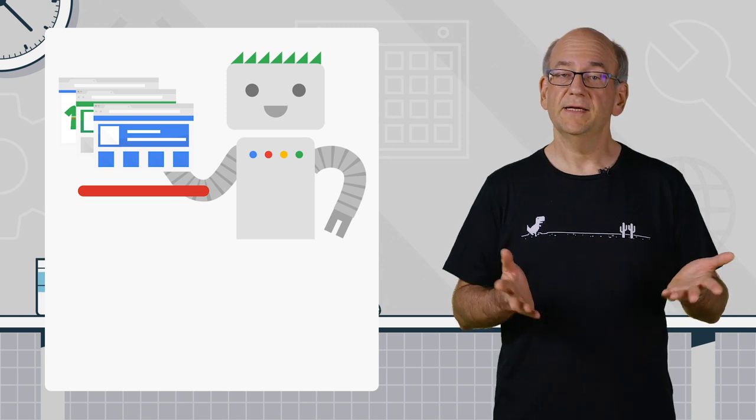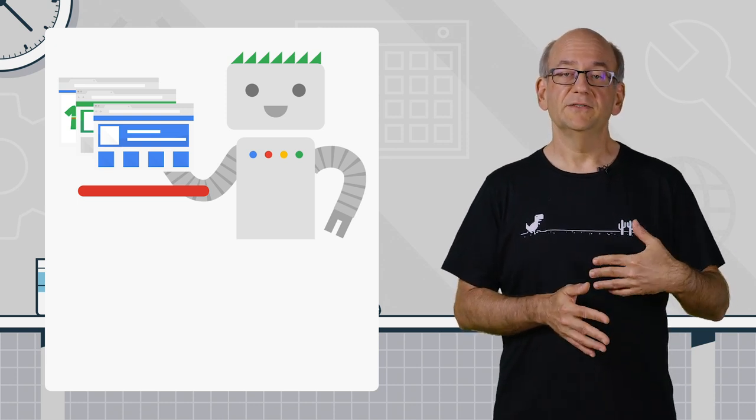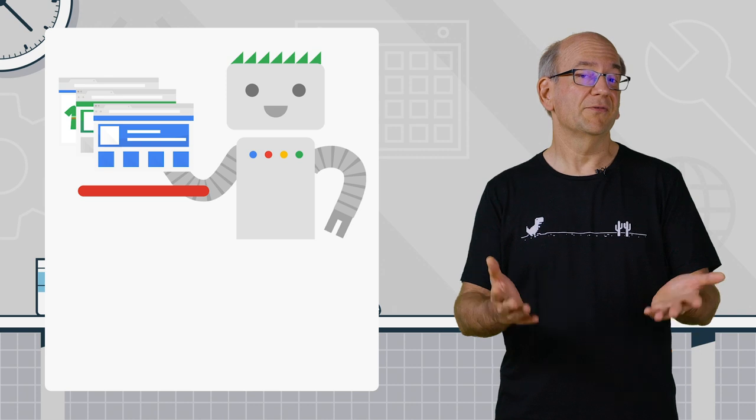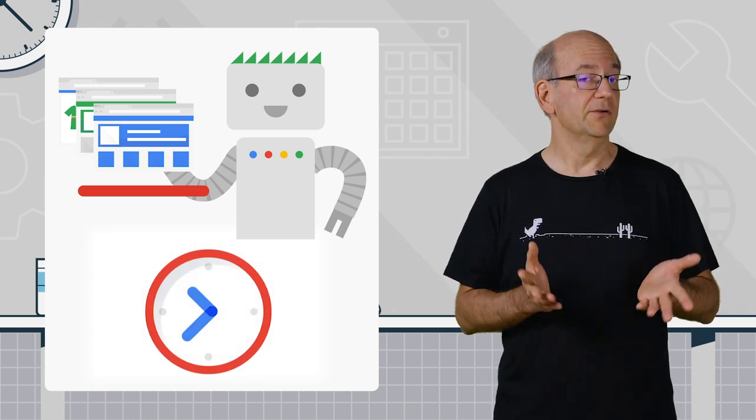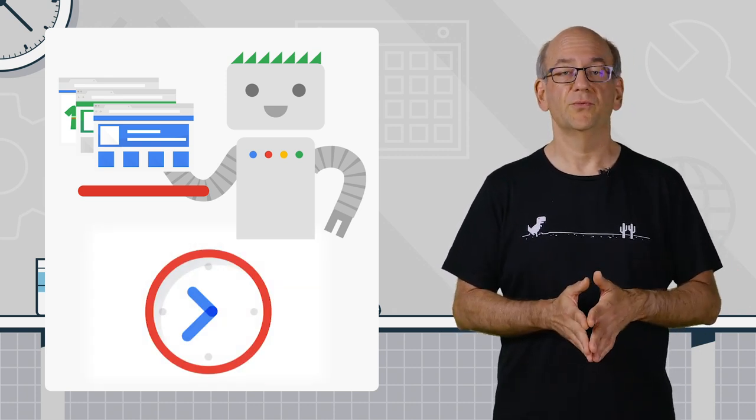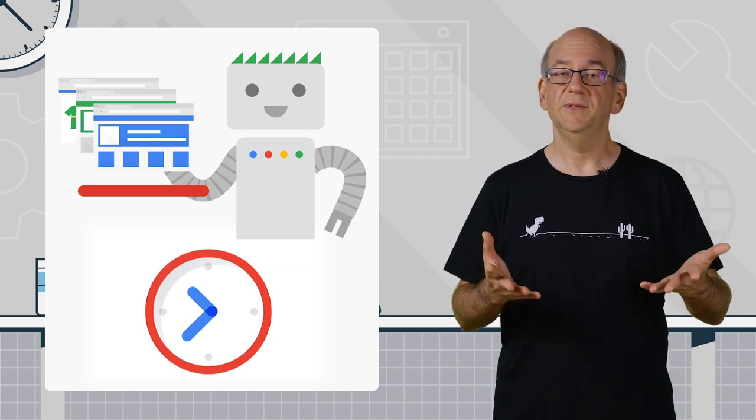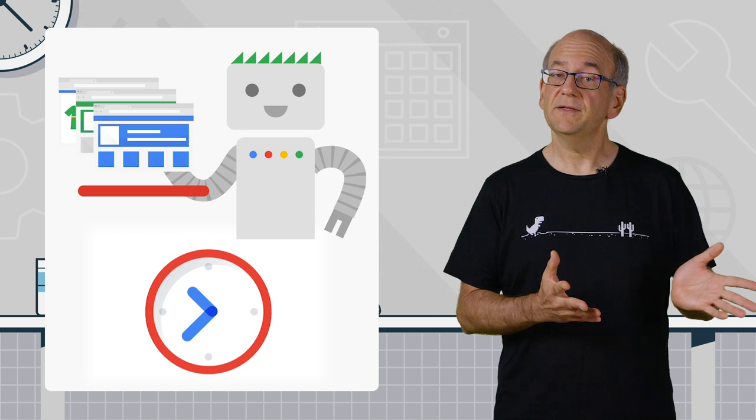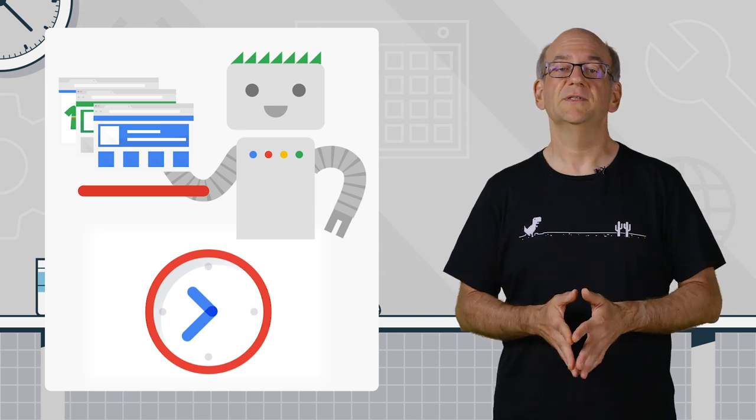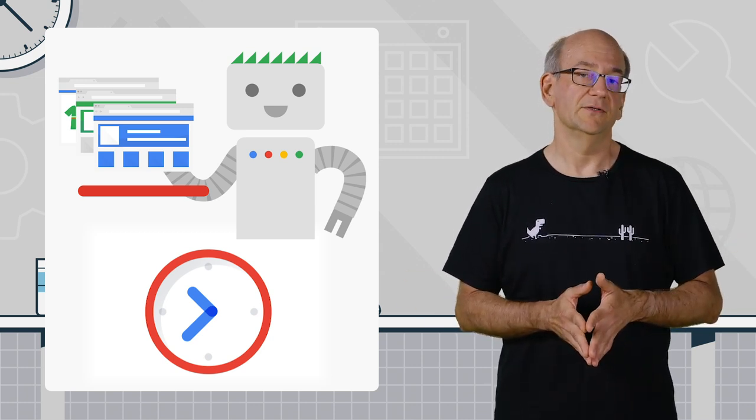So when we recognize that your server has changed, our systems will generally throttle back, make sure that your new server can cope with the extra work of Googlebot crawling, and then over time we'll increase the speed again to a rate that works well for your server and that helps us to keep your website fresh in the search results.